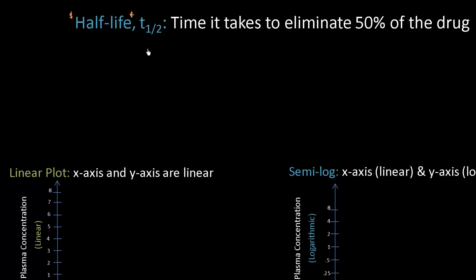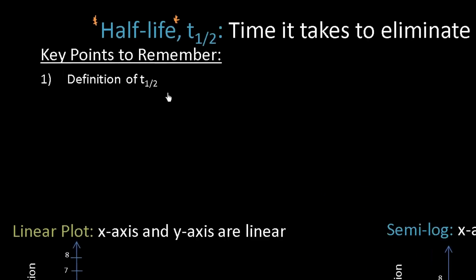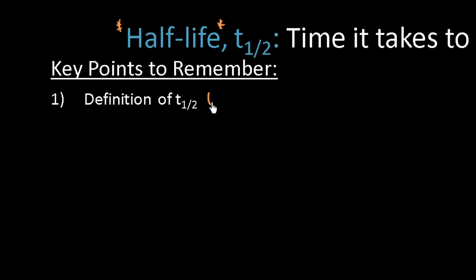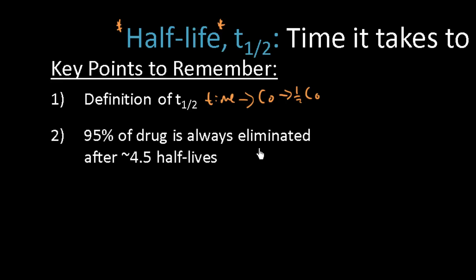Now what I want to do is kind of front load this lecture and give you the three most important points to remember right off the bat and then we'll develop each of these points. So the first point we've already talked about and that is the definition of half-life. This is the time it takes to go from some initial concentration C0 to one half of that initial concentration. The second point I want you to remember is that it doesn't matter what your initial dosage is or your initial concentration. 95% of that drug will always be eliminated after 4.5 half-lives.